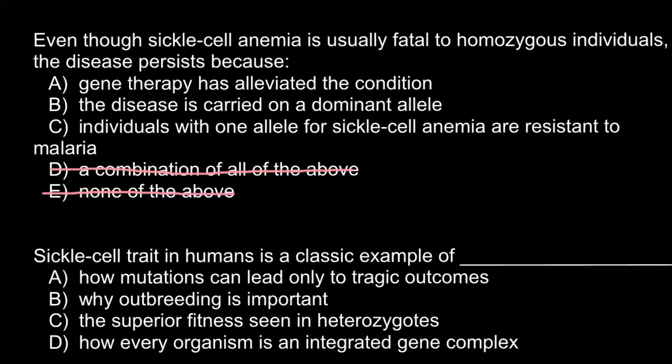Answer A, gene therapy has alleviated the condition, is also not correct. We still cannot use gene therapy for humans; it is only at the experimental stage when such therapy is applied on animal models, so we have to exclude this answer. Answer B, the disease is carried on the dominant allele, is also incorrect, because this disease is caused by the recessive allele and we need a homozygous recessive genotype for this genetic disorder to be expressed.